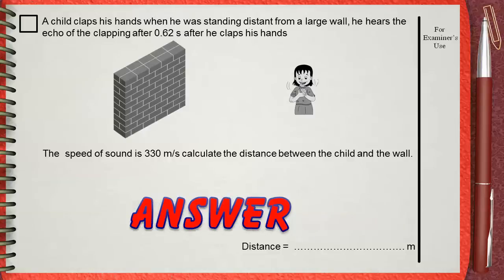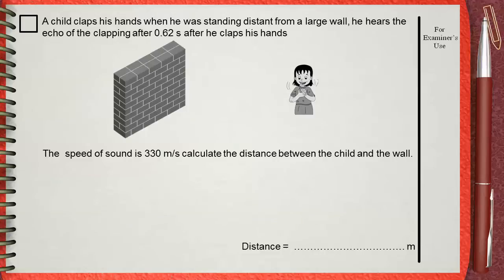When he claps his hands, sound travels from the hands until it reaches the wall. Then sound reflects back to the child.